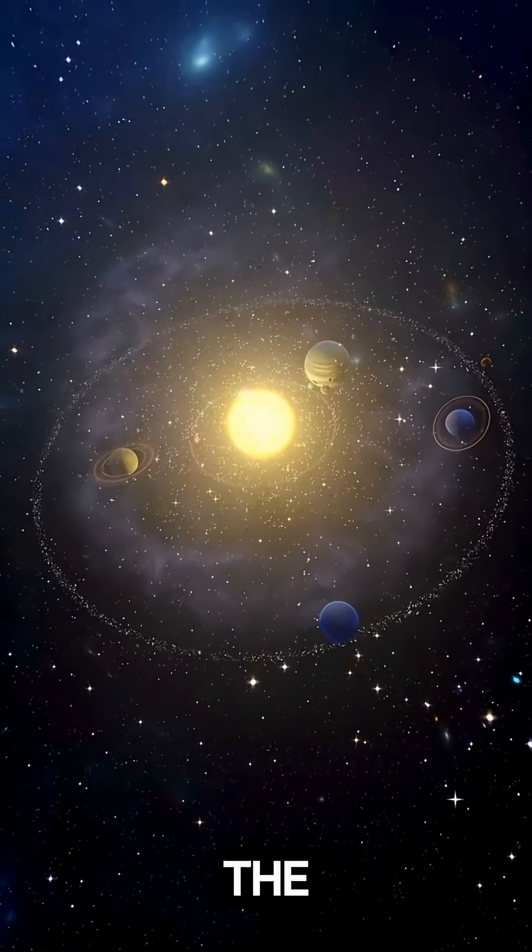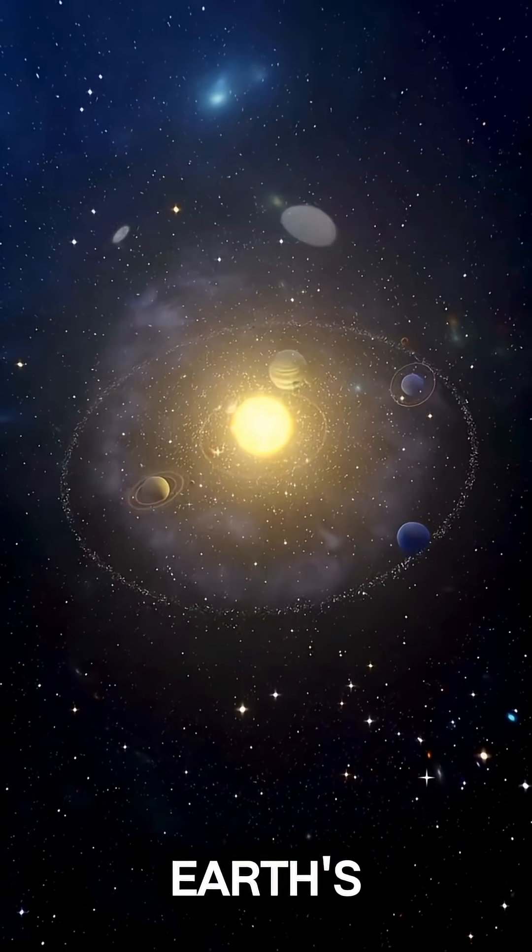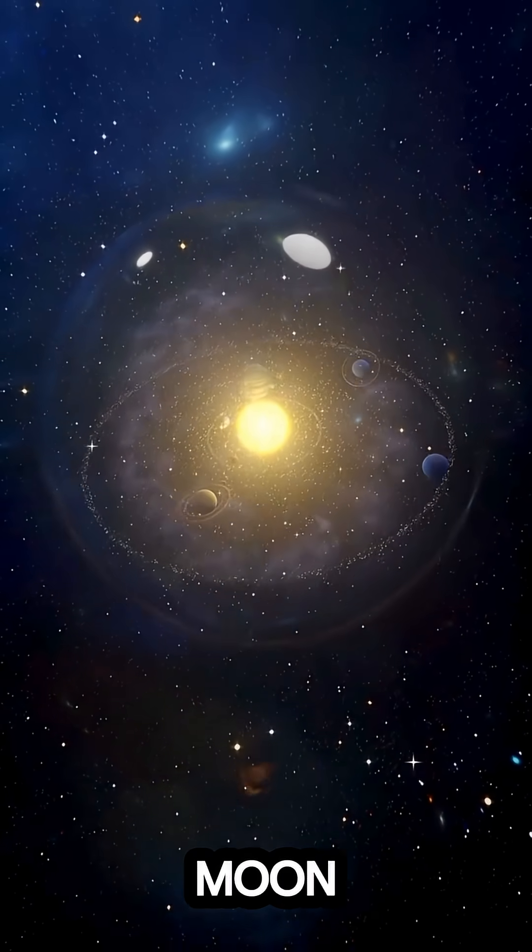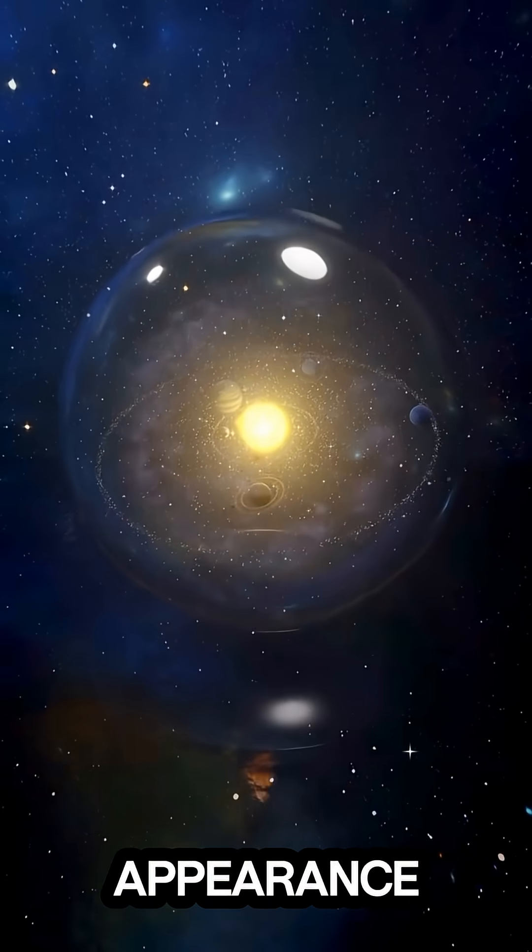Over time, the rings could slowly shift due to Earth's gravity and interactions with the moon, leading to changes in their appearance and density.